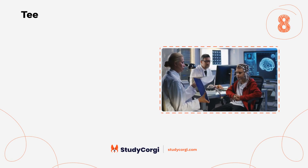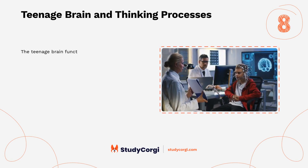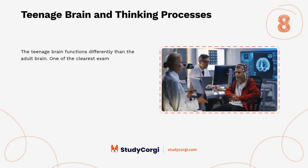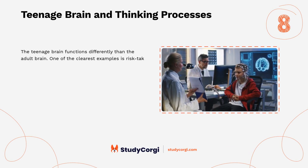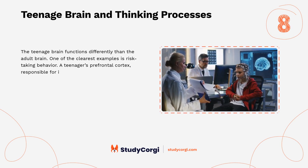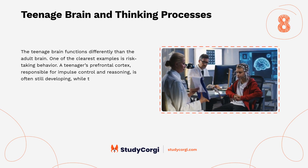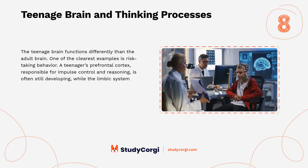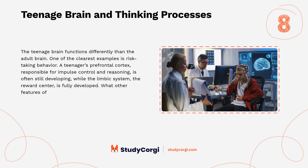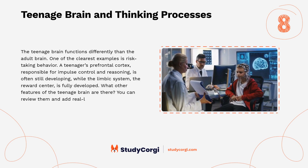Teenage brain and thinking processes. The teenage brain functions differently than the adult brain. One of the clearest examples is risk-taking behavior — a teenager's prefrontal cortex, responsible for impulse control and reasoning, is often still developing, while the limbic system, the reward center, is fully developed. What other features of the teenage brain are there? You can review them and add real-life examples.